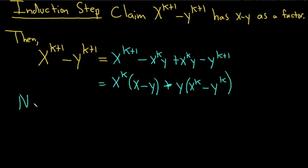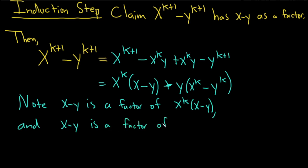And now we have the following. We have that, note, x minus y is a factor of x to the k times x minus y. And x minus y is a factor of this piece here, the x to the k minus y to the k, by the induction hypothesis. So it's a factor of both terms.